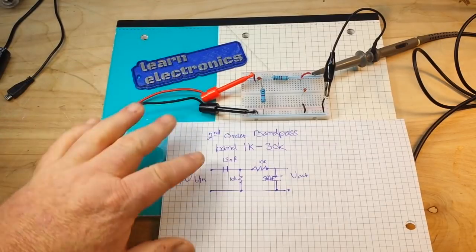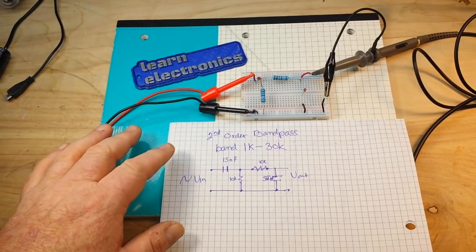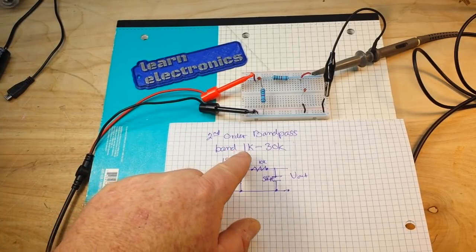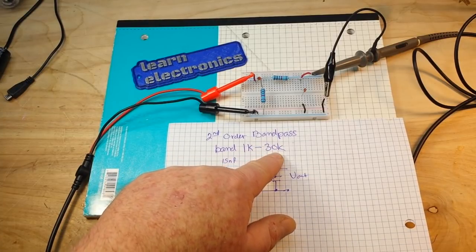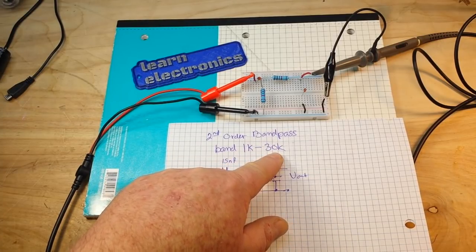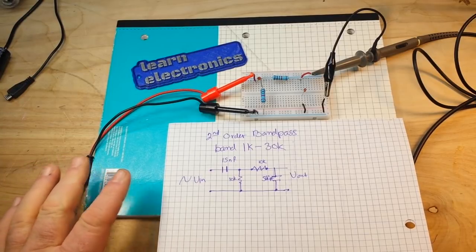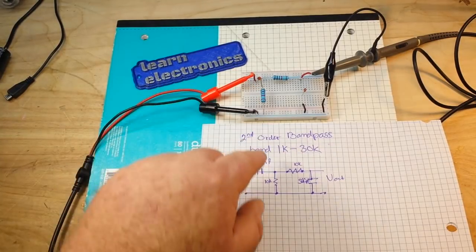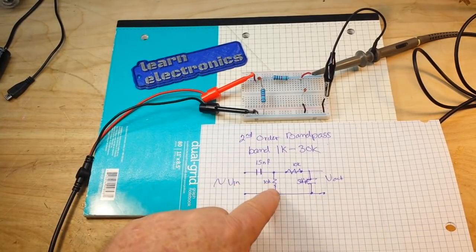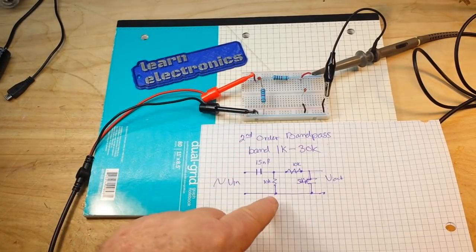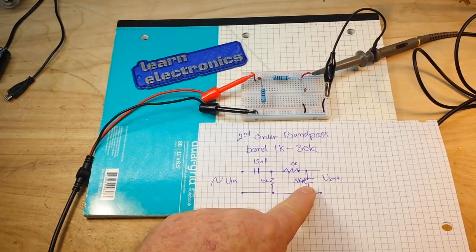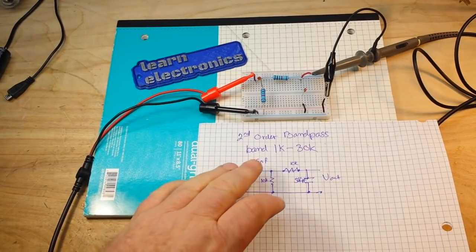So let's put one together on the breadboard. All right, so I've got our bandpass filter laid out here. This is called a second order bandpass because we have two separate filters here, and the band it's going to pass is between 1k and 30k. Now you can use that formula I showed you to figure out how to do that. This first capacitor is 15 nanofarads, and then this first resistor is 10k. The second resistor is also 10k, and the second capacitor is 560 picofarad.